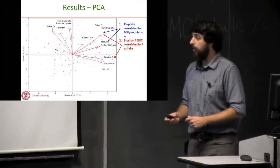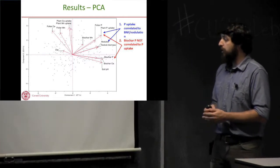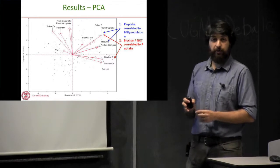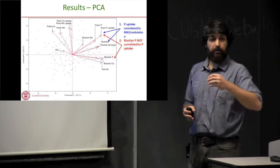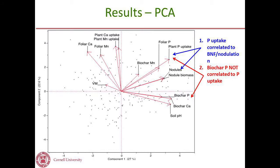To correlate which biochar constituents drove these changes, we first performed multiple linear regression, then ran significant factors through principal component analysis. We found that nodulation, nodule biomass, and nitrogen derived from fixation were principally correlated to foliar plant phosphorus and plant phosphorus uptake. We also found that phosphorus uptake and foliar P were not correlated to biochar P — so plants were getting more phosphorus, but this phosphorus wasn't really coming from the biochar itself.